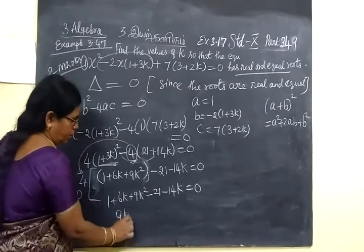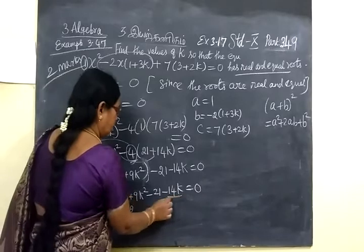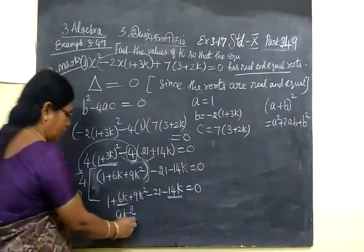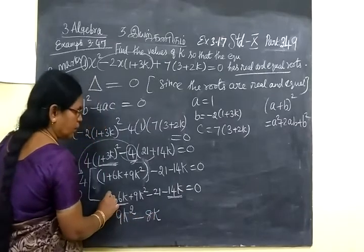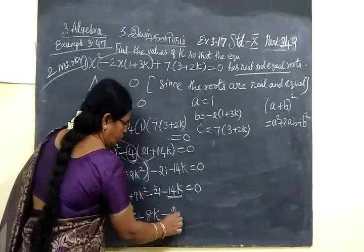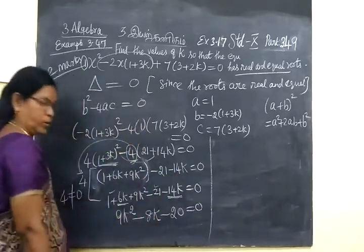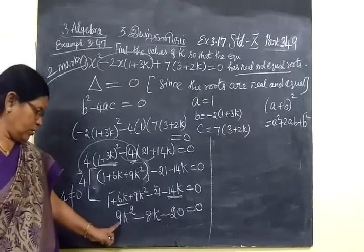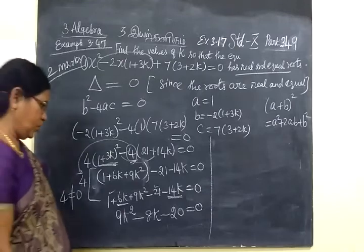Therefore, 9K² plus 6K minus 14K, so minus 8K, then minus 21, so minus 20 equal to 0. So the quadratic equation is 9K² minus 8K minus 20 equal to 0.